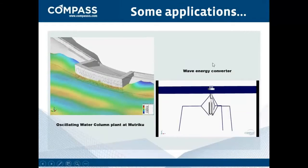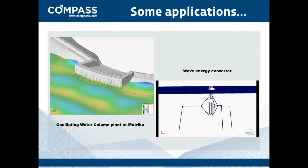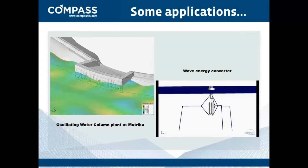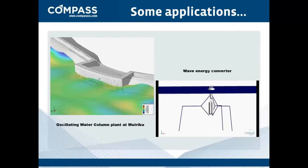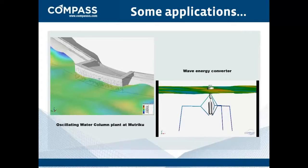Here you can see it's not exactly a floating object. As I said before, with CFEM you could define very different analyses, like this oscillating water column plant, which is located in the Basque Country, in Mutrico — it's also a wave energy converter. You can see here the mooring segments, their connections between each other and connected to the different parts of the device.